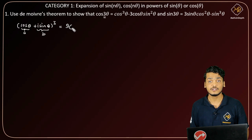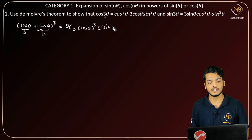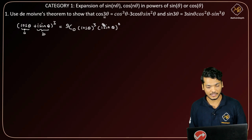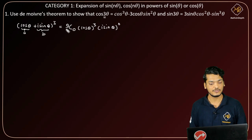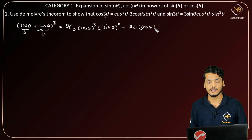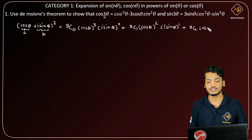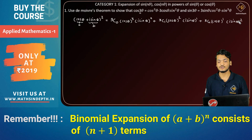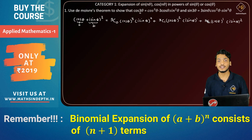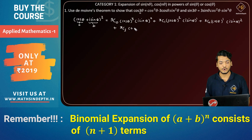I will expand using 3C0·cos³θ·(i·sinθ)^0, plus 3C1·cos²θ·(i·sinθ)^1, plus 3C2·cosθ·(i·sinθ)^2, plus 3C3·cos^0(θ)·(i·sinθ)^3. Note that for (a+b)^n there are n+1 terms, so here with n=3 we get 4 terms total.